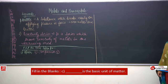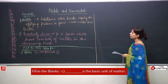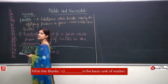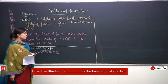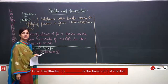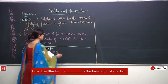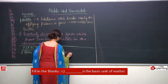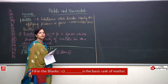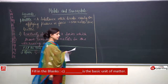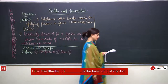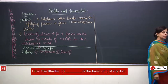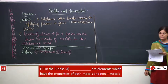Next: dash is the basic unit of matter. We have discussed this in detail. The basic unit of matter is atom. Coming to the fourth one: dash are elements which have the properties of both metals and non-metals.